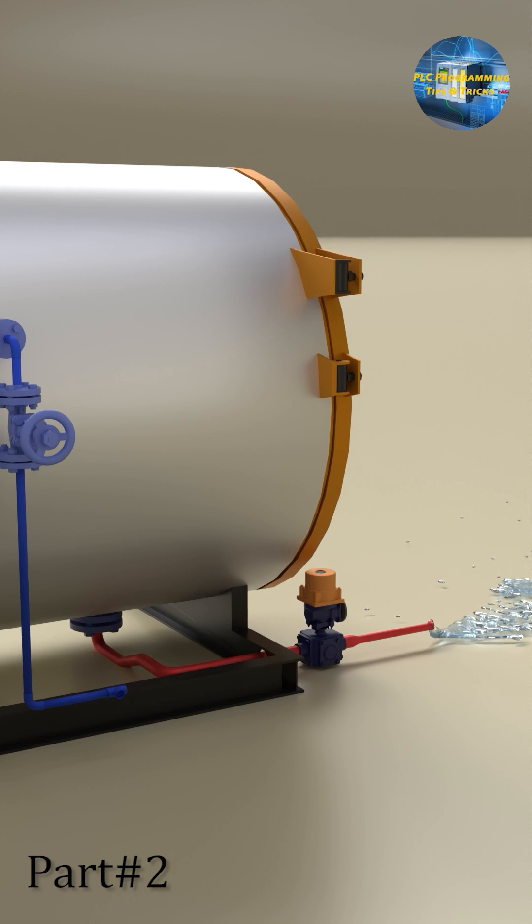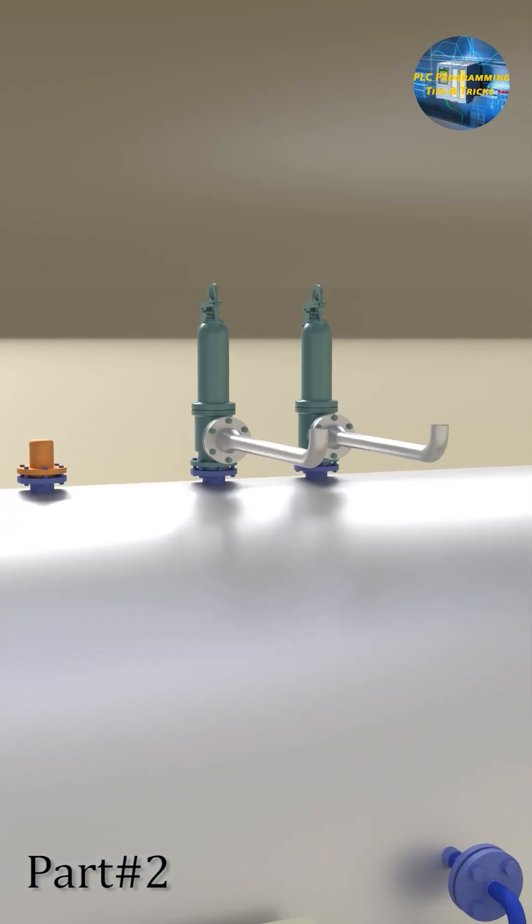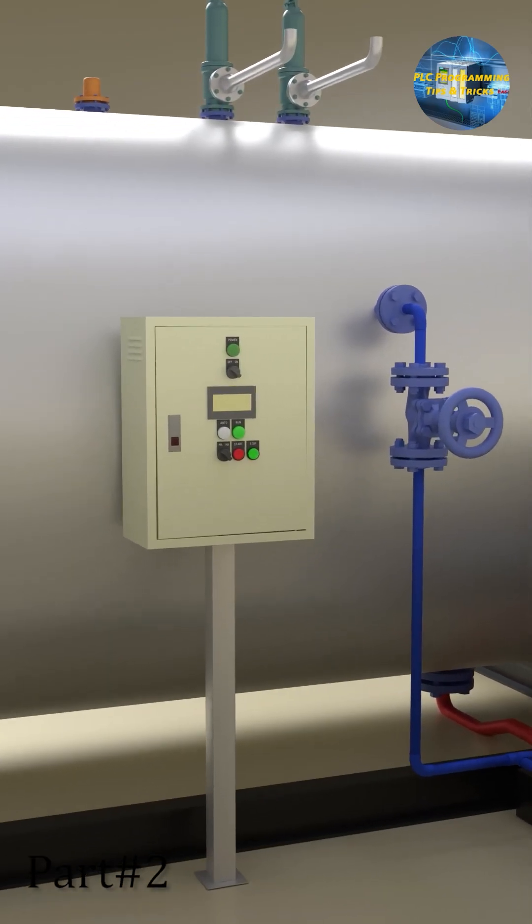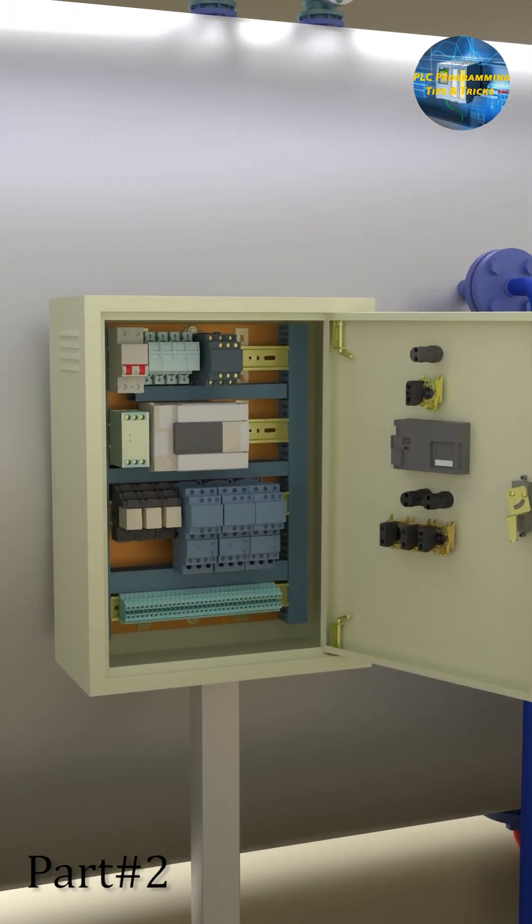Draining reduces the risk of internal corrosion caused by settled debris. Now let's see a control panel for this boiler. A PLC control panel in the boiler automates operations like startup, shutdown, and load management.